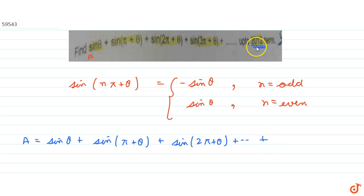So what will be the 2012th term? See, for the first term n is 0, for the second term n is 1, for this third term n is 2. So basically n is the term number minus 1. So the last term will be sin(2011 pi plus theta).